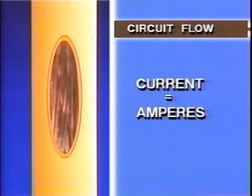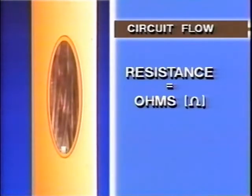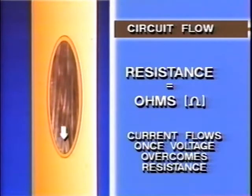The flow of electrons can be measured. Current is the number of electrons that move past a certain point over a given time period. Current is measured in units called amperes. Every circuit resists current flow. This resistance is another component of electricity, measured in units called ohms. Current flows once voltage overcomes the circuit's resistance. The lamp is the primary resistance or load device in this circuit.